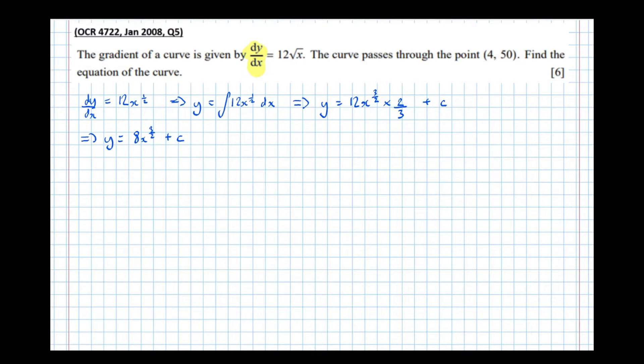So now we need to find the value of c. It's given us a point on the curve at (4, 50). So if we substitute that in,